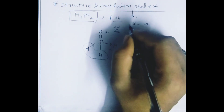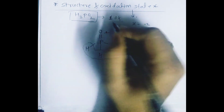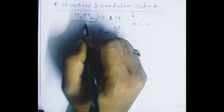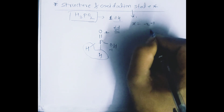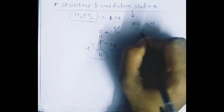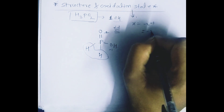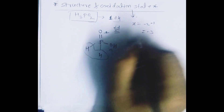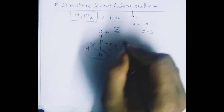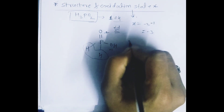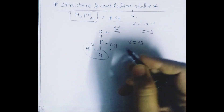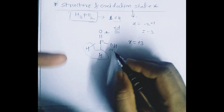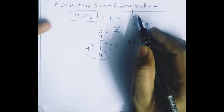We are not considering the two hydrogen atoms directly bonded to phosphorus for the oxidation state, because these are oxy acids. So minus one minus two equals minus three, giving phosphorus a plus three oxidation state. This gives us the structure and oxidation state of H3PO2.